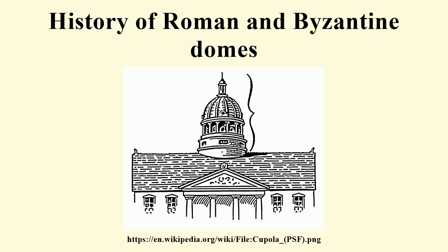Roman domes were used in baths, villas, palaces, and tombs. Oculi were common features. They were customarily hemispherical in shape and partially or totally concealed on the exterior, in order to buttress the horizontal thrust of a large hemispherical masonry dome. The supporting walls were built up beyond the base or at least the haunches of the dome, and the dome was then also sometimes covered with a conical or polygonal roof. A variety of other shapes, including shallow saucer domes, segmental domes, and ribbed domes were also sometimes used.